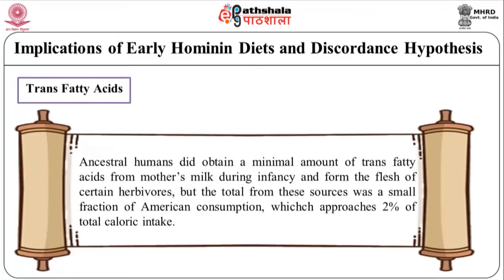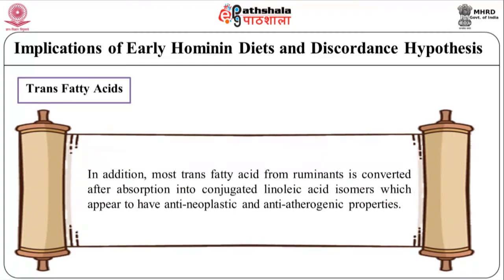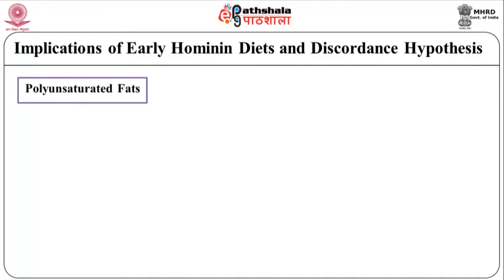Regarding trans fatty acids: ancestral humans did obtain a minimal amount of trans fatty acids from mother's milk during infancy and from the flesh of certain herbivores, but the total from these sources was a small fraction of American consumption, which approaches 2% of total caloric intake. In addition, most trans fatty acids from ruminants are converted after absorption into conjugated linoleic acid isomers, which appear to have anti-neoplastic and anti-atherogenic properties.